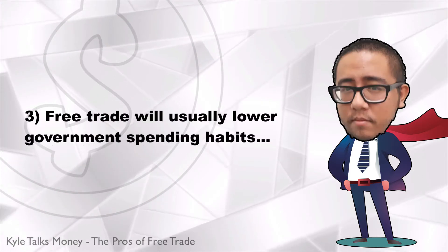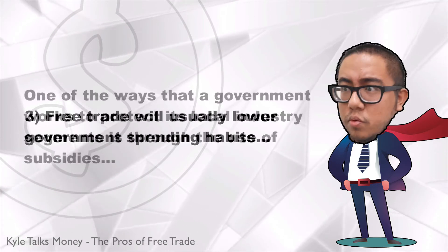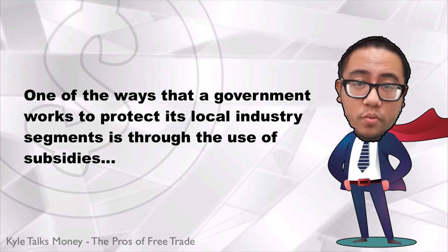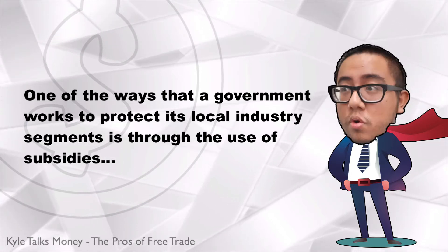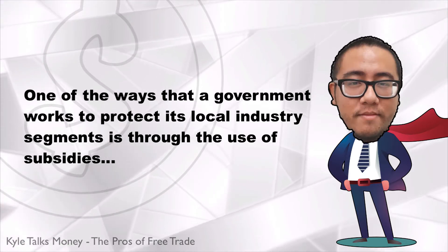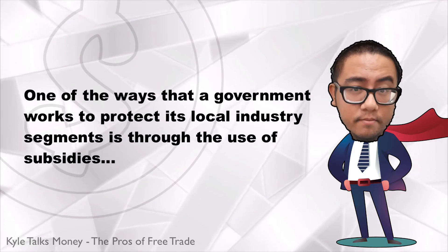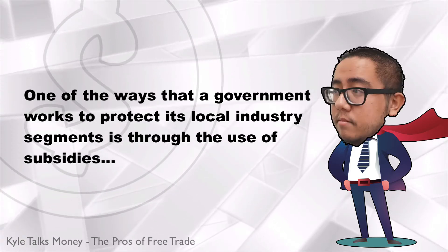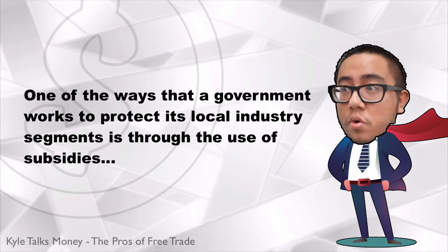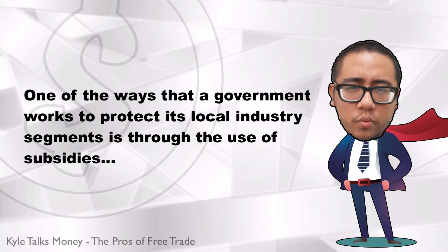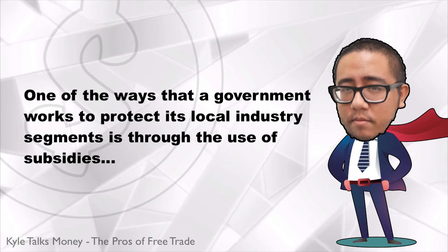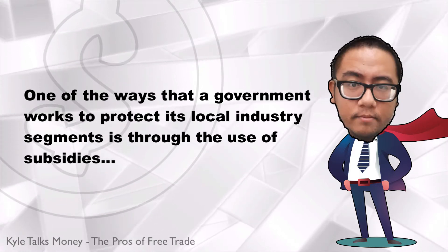Number three: free trade will usually lower government spending habits. One of the ways a government works to protect its local industry is through the use of subsidies. These benefits may include tax incentives, monetary rebates, protective tariffs, and other market manipulations which allow corporations to function closer to a monopoly than if forced to compete on a global stage. Free trade lowers the expenses a government must budget for because companies no longer require the same protections, and this spending on protectionism can then be applied to other societal needs.